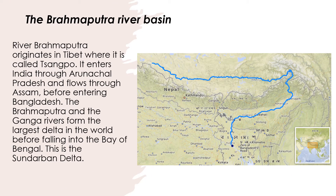River Brahmaputra originates in Tibet where it is called Tsangpo. It enters India through Arunachal Pradesh and flows through Assam before entering Bangladesh. The Brahmaputra and Ganga rivers form the largest delta in the world before falling into the Bay of Bengal. This is the Sundarban Delta.